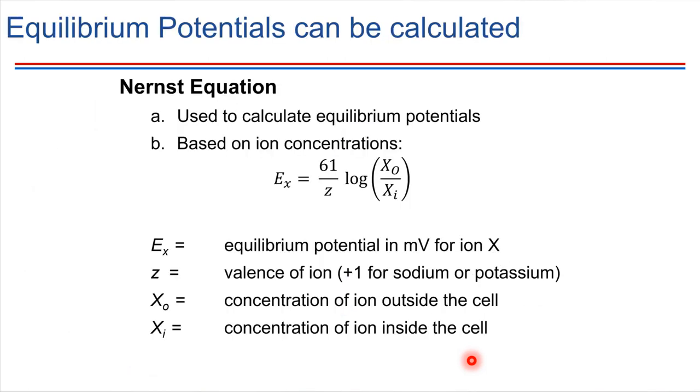The way that we can calculate equilibrium potentials is by using what's called the Nernst equation. The Nernst equation takes into account the concentration differences outside versus inside the cell, and it also takes into account the magnitude of the charge. This Z refers to the valence of the ion.